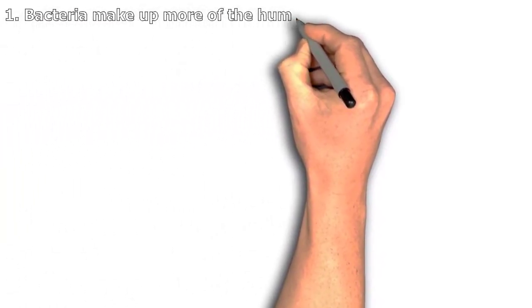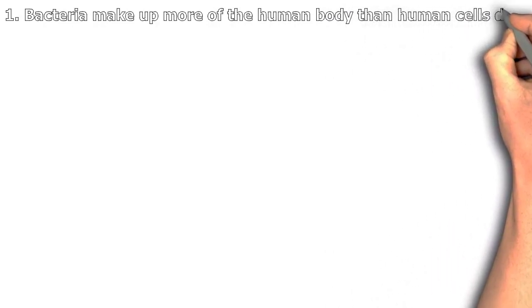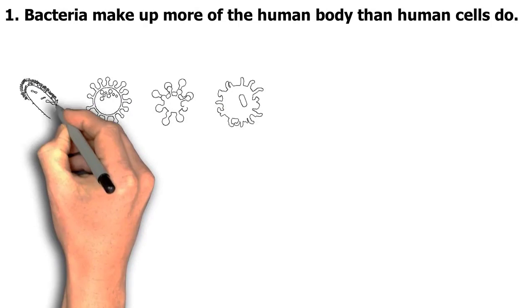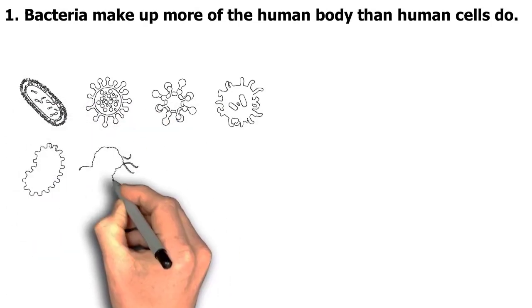1. Bacteria make up more of the human body than human cells do. According to estimates, there are 10 microbial cells for every human cell in the body.